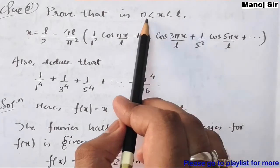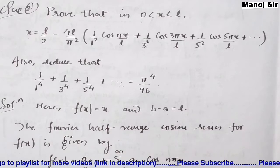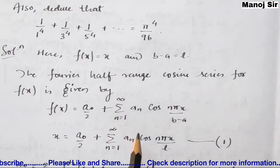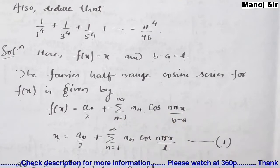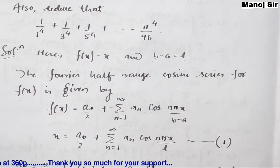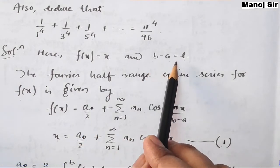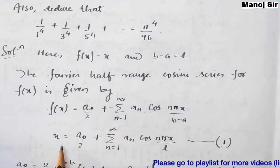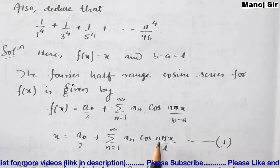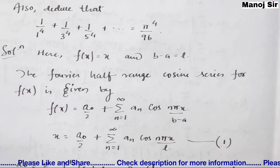Here b - a = l. The Fourier half-range cosine series for any function f(x) is given by a₀/2 + Σ(n=1 to ∞) aₙ cos(nπx / (b-a)). This is the general formula. Substituting b - a = l and f(x) = x gives: x = a₀/2 + Σ(n=1 to ∞) aₙ cos(nπx/l). Call this equation (1). We need to find a₀ and aₙ.